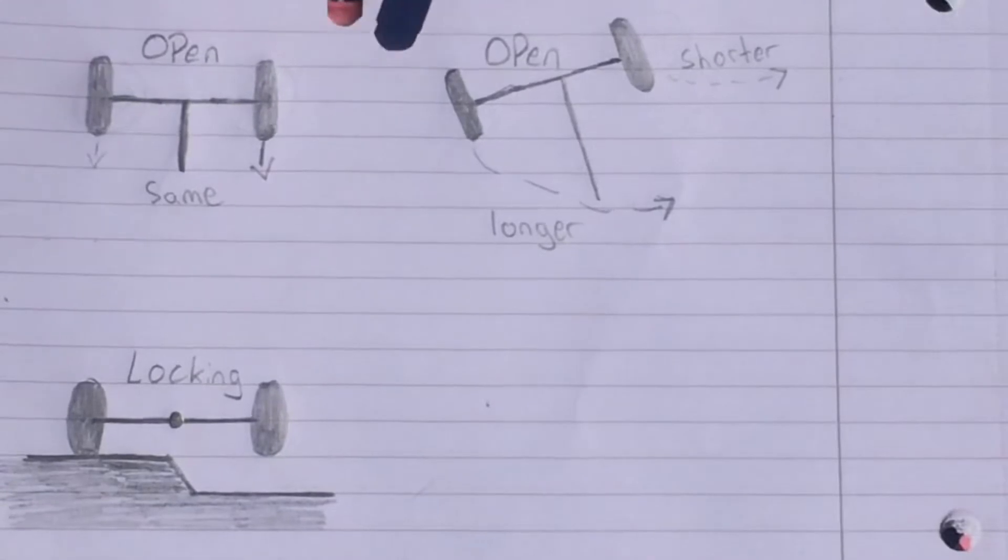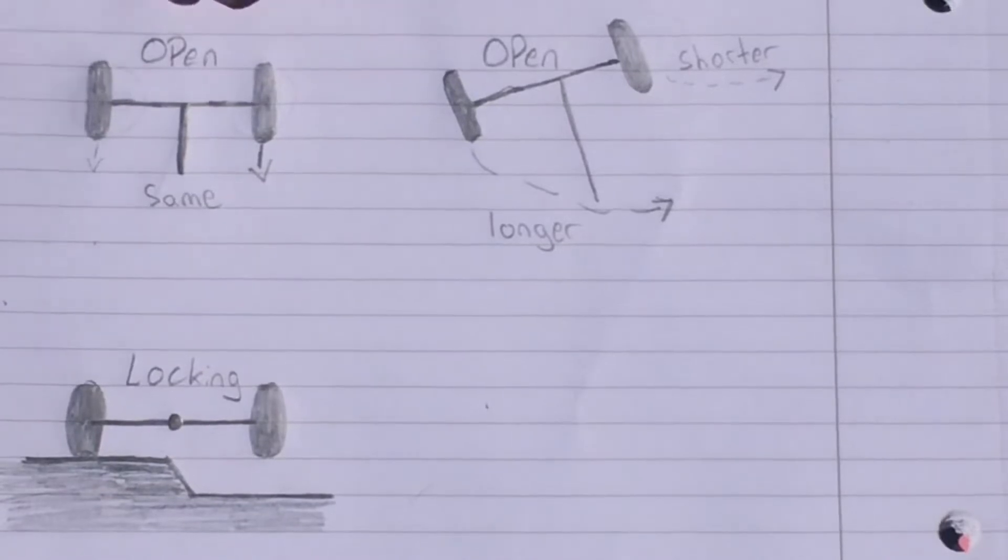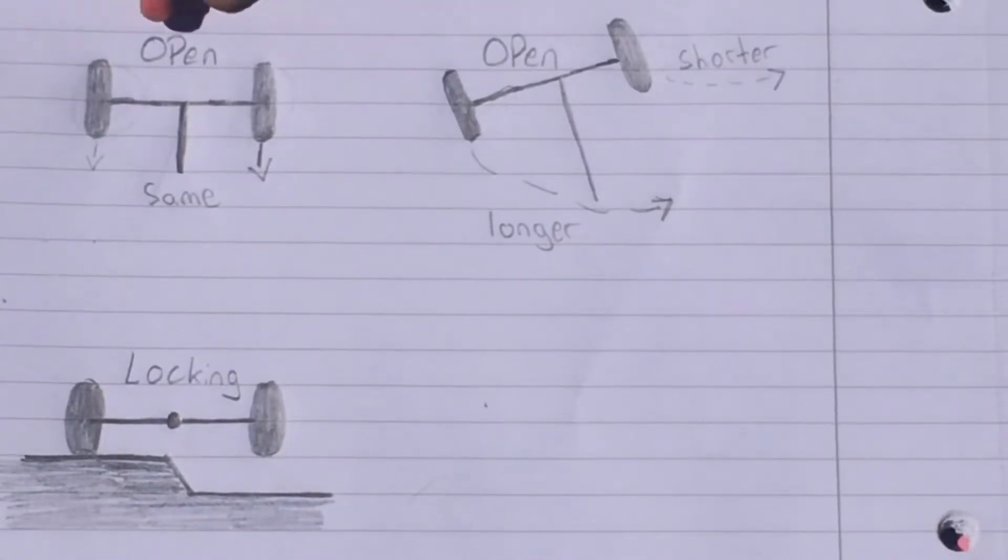I drew some beautiful illustrations here to show you the difference between an open and a locking differential. Let's look at this first one here, this is from an open differential. So the big difference is an open differential means that the wheels are going to turn at different speeds all the time.